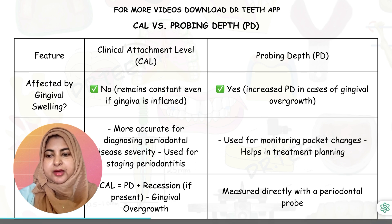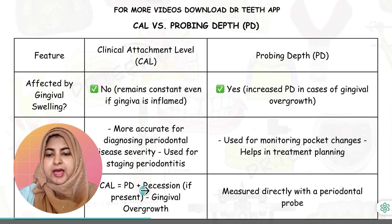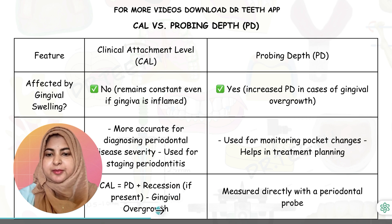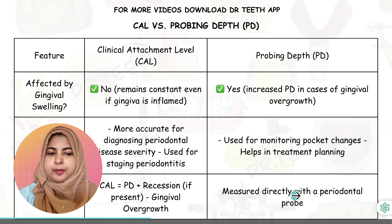How do we calculate them? CAL is calculated by first measuring the probing depth and adding the recession if present, or subtracting the gingival overgrowth if present. Probing depth is measured directly with the periodontal probe from the gingival margin to the base of the pocket.